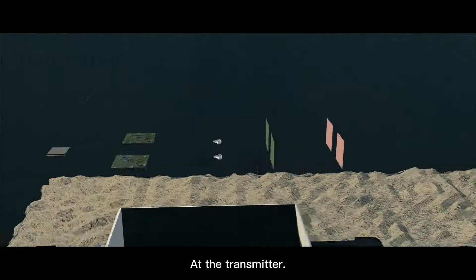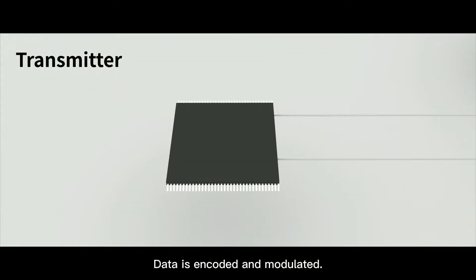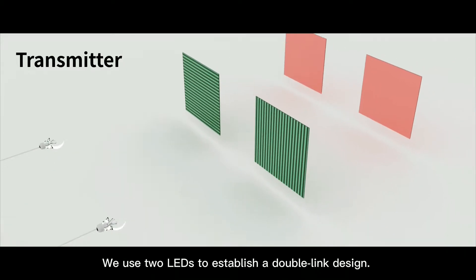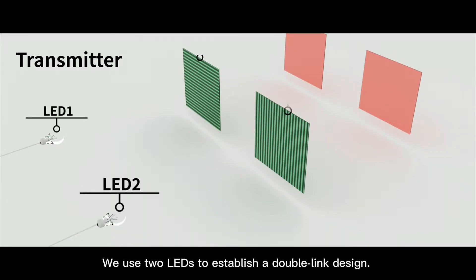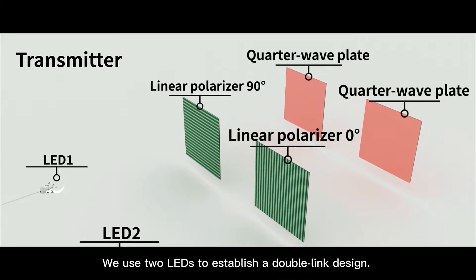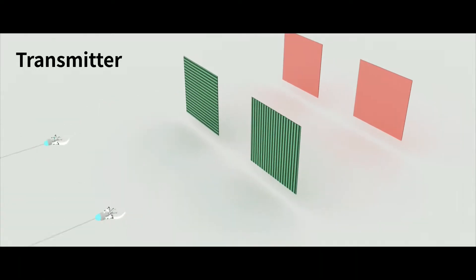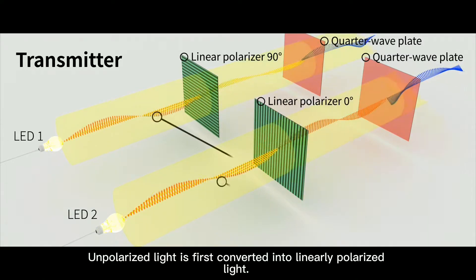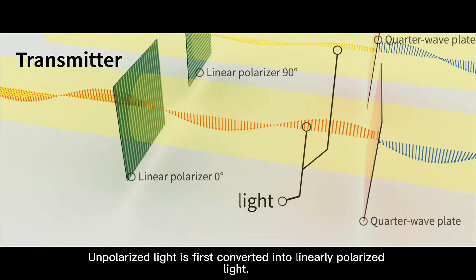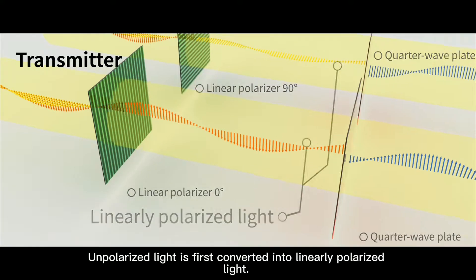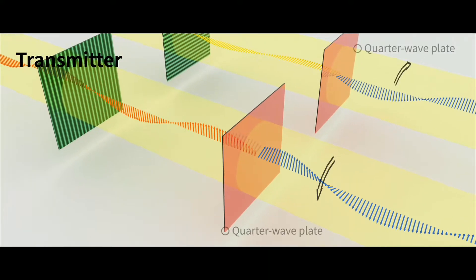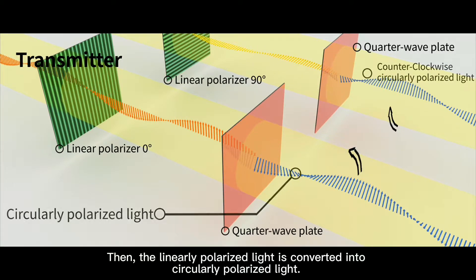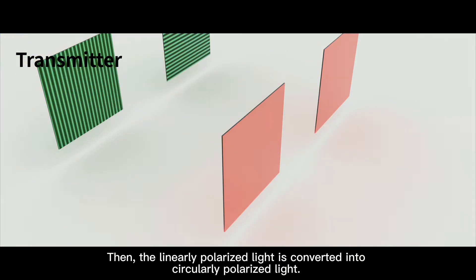At the transmitter, data is encoded and modulated. We use two LEDs to establish a double-linked design. Unpolarized light is first converted into linearly polarized light, then the linearly polarized light is converted into circularly polarized light.